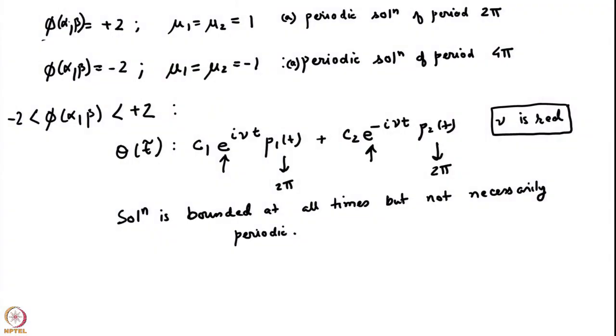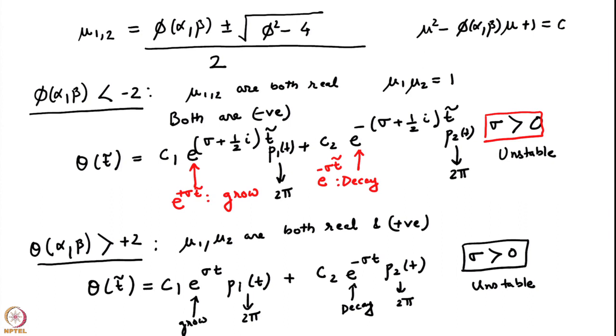Without even finding φ(α, β) analytically, we can conclude about the qualitative behavior of solutions to the Mathieu equation. All of this can be visualized on the α-β plane. At every point on that plane, one has a given value of α and β, and depending on which region or curve φ satisfies, we can demarcate regions of stable versus unstable behavior. The boundaries between regions are curves, and the inequalities define areas. We can determine the qualitative nature of these curves on the α-β plane.